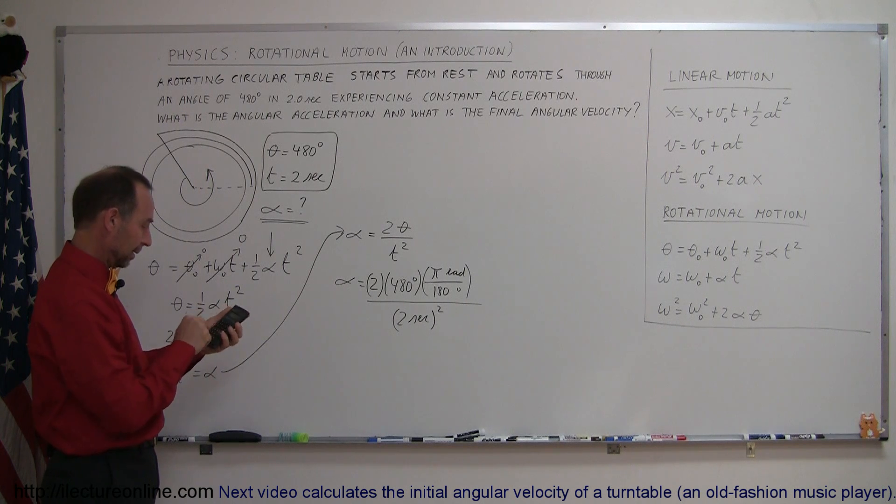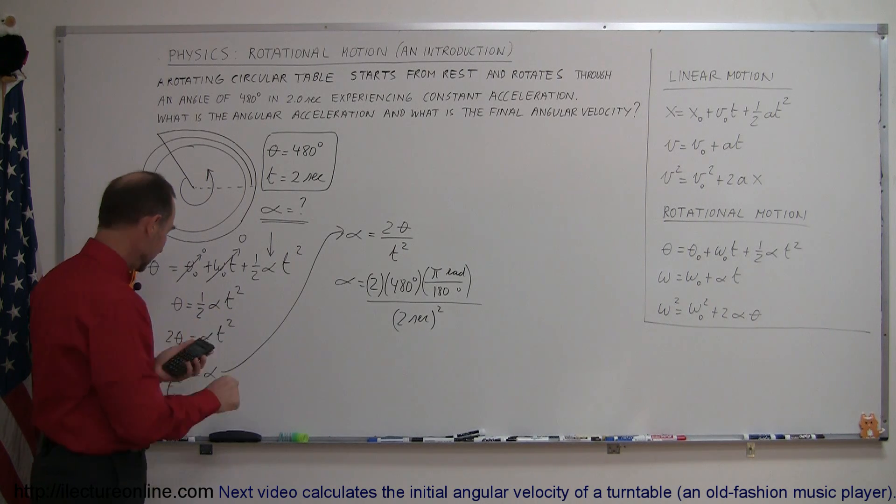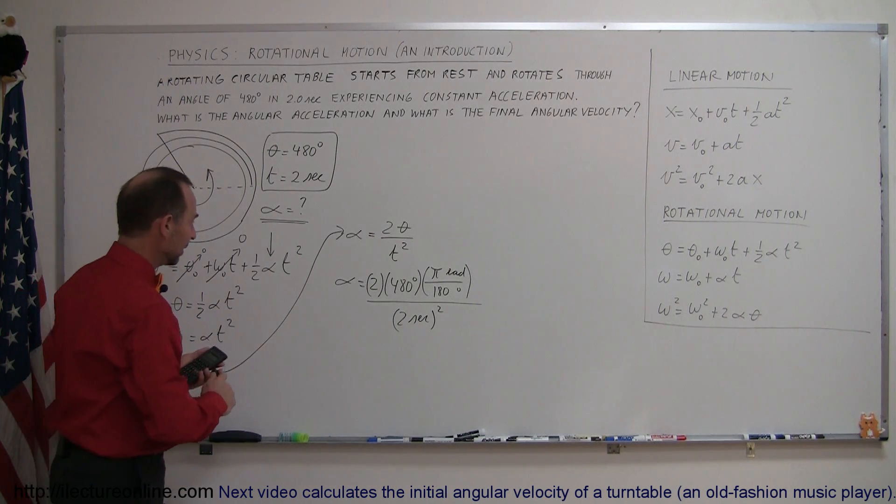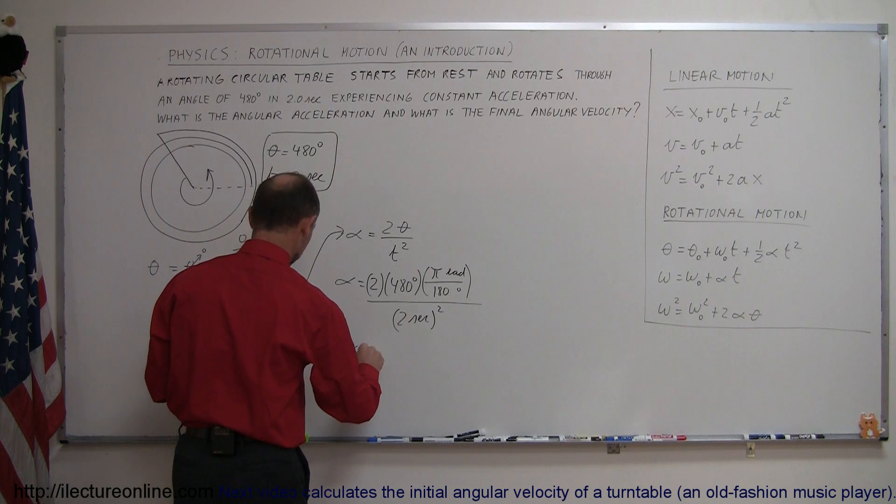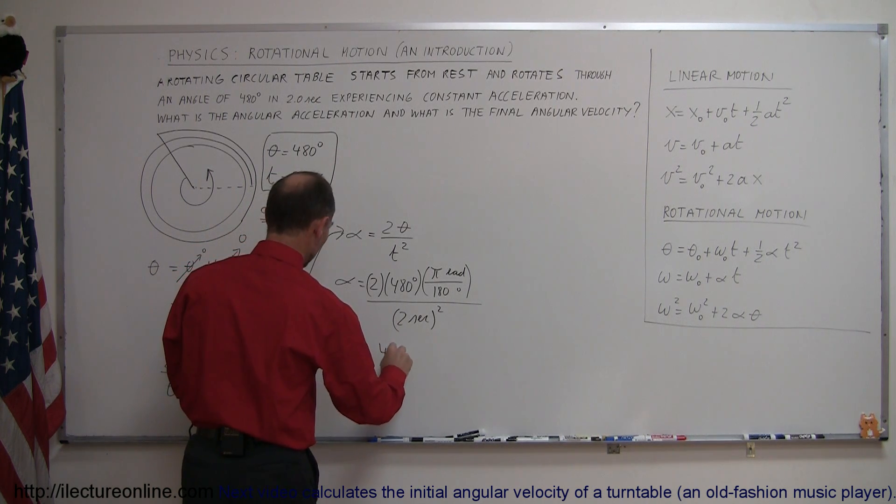So we have 2 times 480 times pi divided by 180, and divided by 2 squared, which is 4. We get alpha equals 4.19.